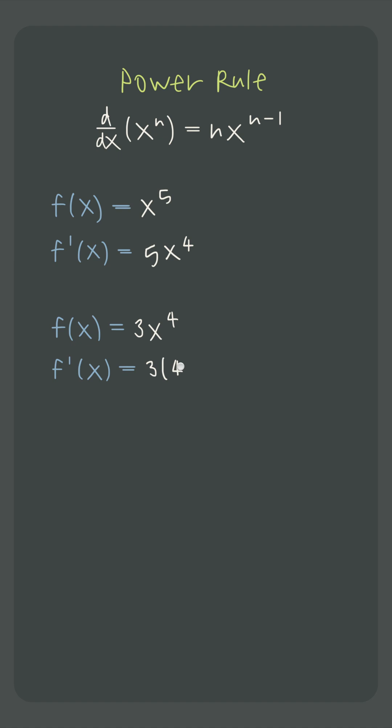So the derivative here is 3 times 4, x to the 4 minus 1, or 12x to the 3.